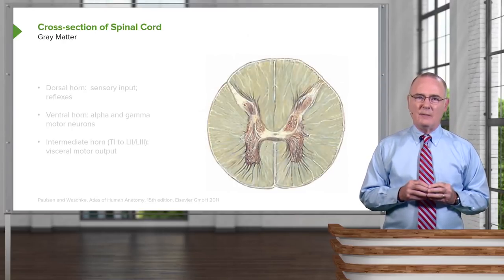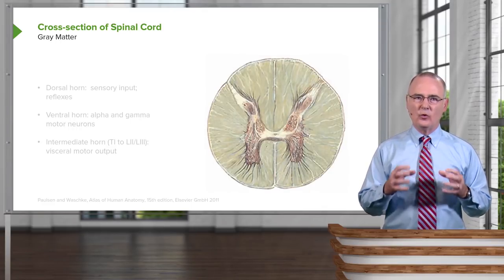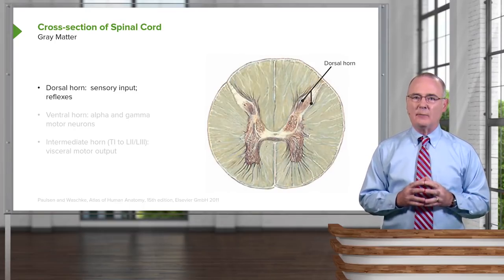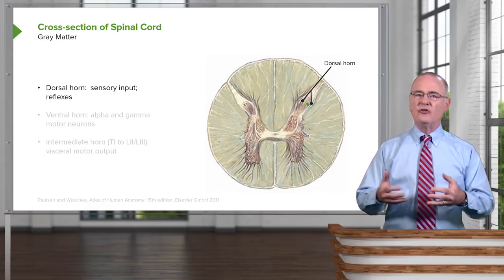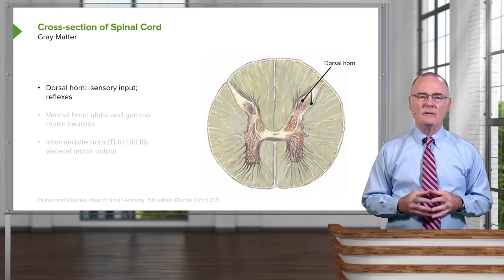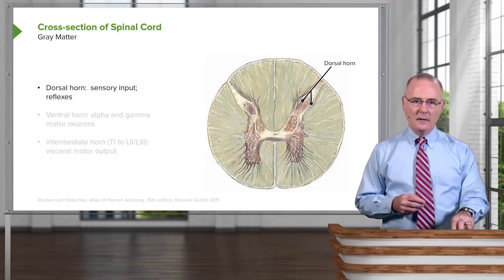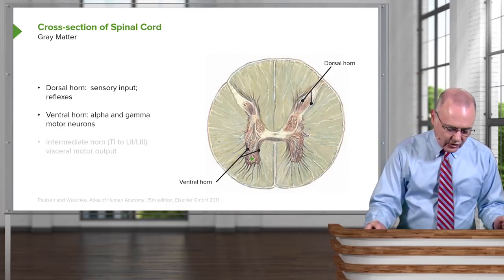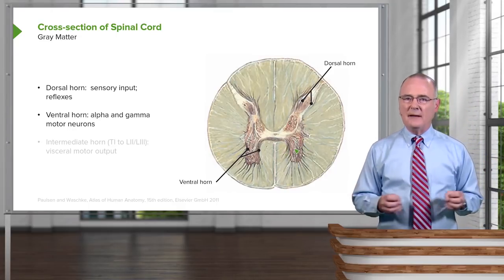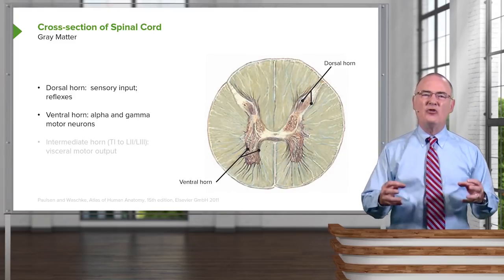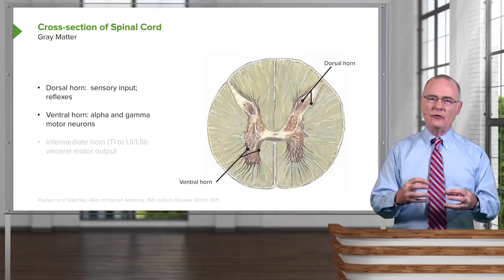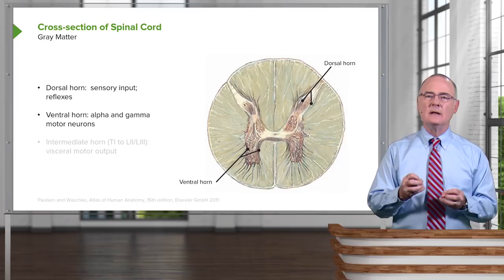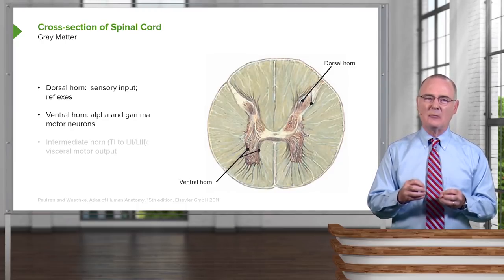I want you to understand some of the details that relate specifically to gray matter. The gray matter is organized into horns. The dorsal horn receives sensory input and also receives input involved in the coordination of reflexes. The larger area located ventrally is the ventral horn, a more expanded area of the gray matter. The ventral horn houses alpha and gamma motor neurons. So we have a functional division of labor: the dorsal horns process and relay sensory information, whereas the ventral horns are responsible for motor output.